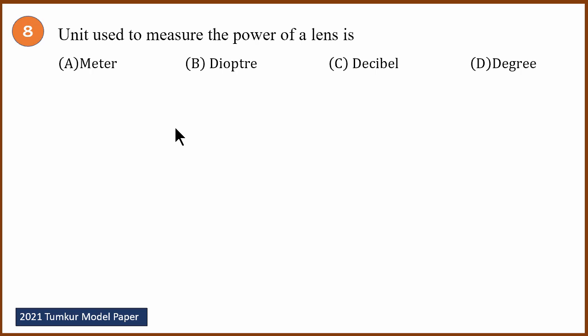Eighth question — a simple unit question: what is the SI unit for the power of a lens? The SI unit for lens power is the diopter.